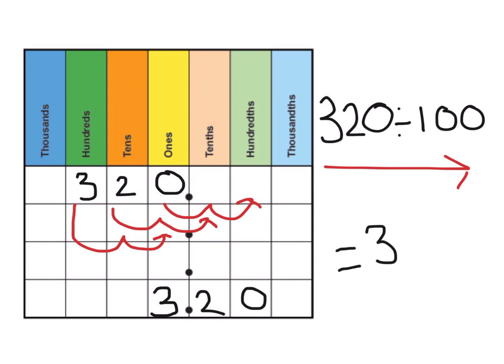So my answer would be 3.2. Again, because the 0 is on the end and it shows there's nothing there, we don't need to put it in. So the answer is just 3.2. Have a look at the activity for this week and give it a go.